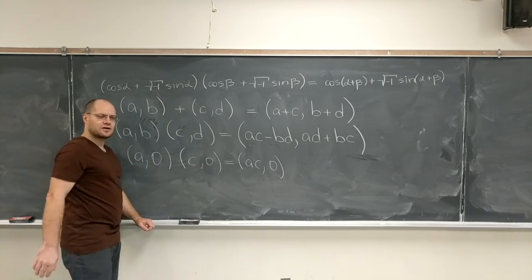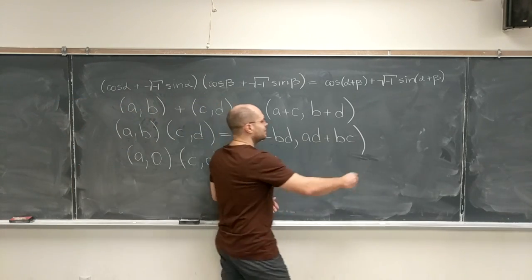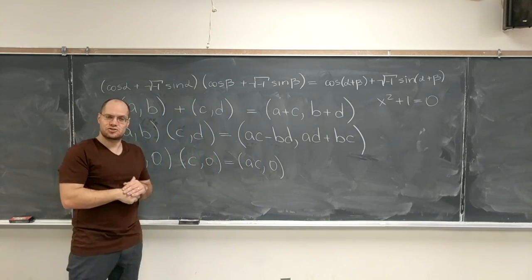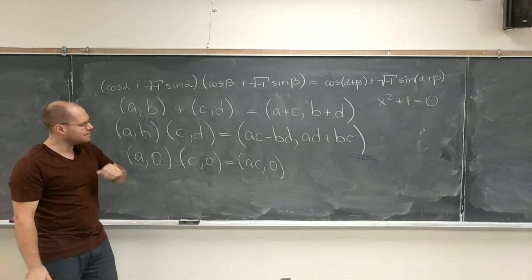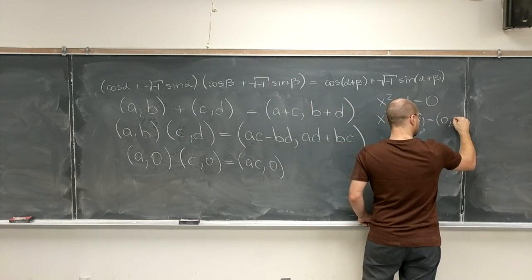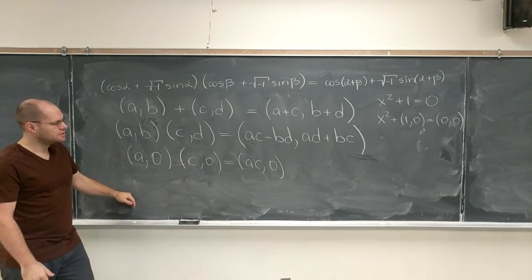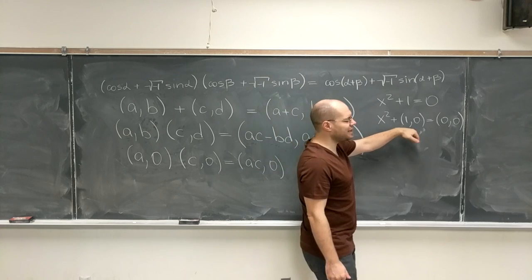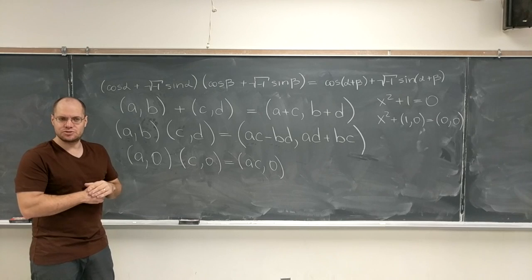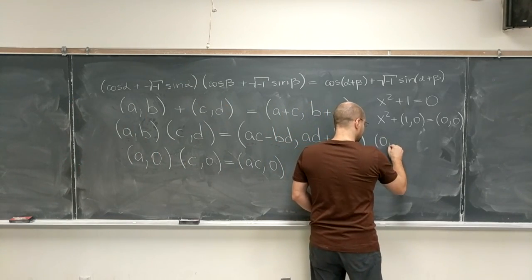And now if we're total sticklers for this notation, instead of writing an equation as you're about to see that's now possible to solve, if we were total sticklers for Hamilton's notation, we would have to write this. Because now there's no such thing as real numbers. We only have pairs of real numbers, so everything needs to be written as pairs. So if you are uncompromising about the approach, this is what you need to do. And this clearly has a solution, and that solution is (0, 1).